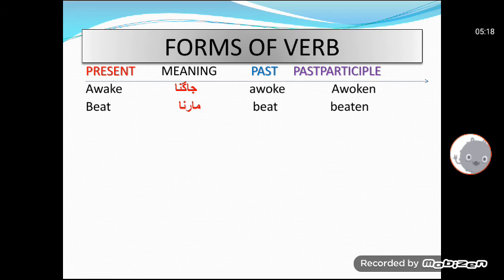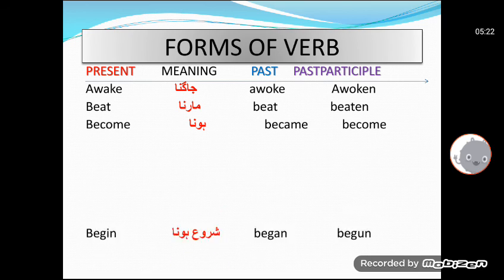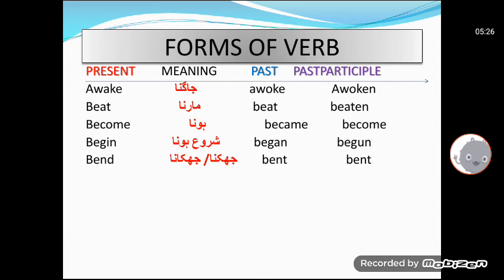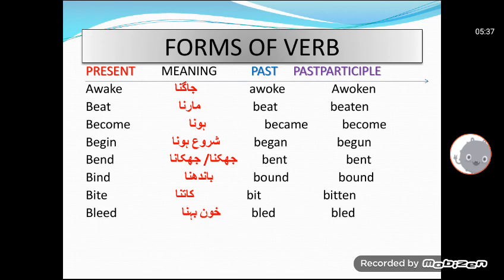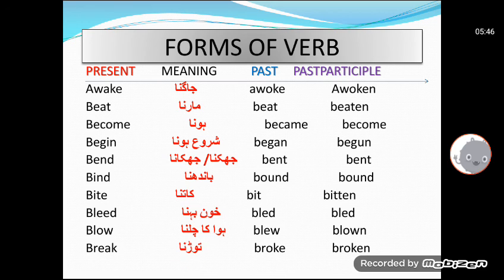There are 500 English verbs. Now in this: become, became, become—hona; begin, began, begun—shuru hona; bend, bent, bent—jhukna ya jhukana; bind, bound, bound—bandhna; bite, bit, bitten—kaatna; bleed, bled, bled—khoon behna; blow, blew, blown—hawa ka chalna; break, broke, broken. Clear? So these are 10 forms of verb. You have to write in your notebooks and memorize them carefully.